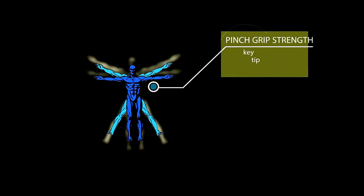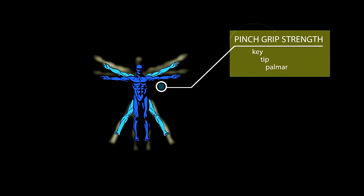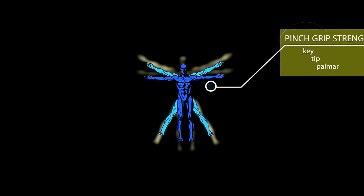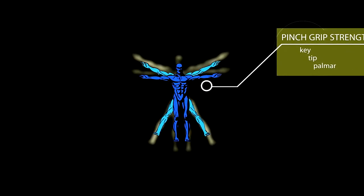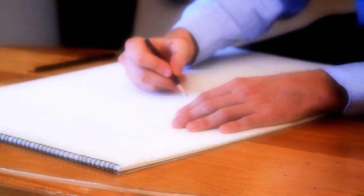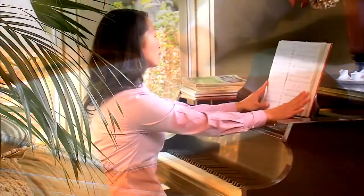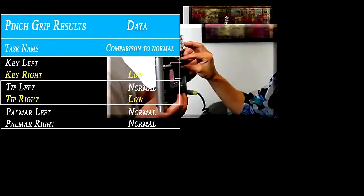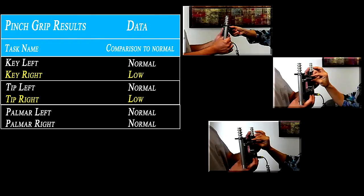The three different types of pinch grip testing—key, tip, and palmer grip—are essential to establishing the dexterity of the hand. This dexterity is associated with activities ranging from holding a pencil to playing a piano. In our patient Emma, we noticed she had weaknesses in key and tip grip, but not in palmer grip.